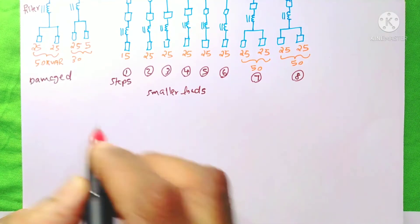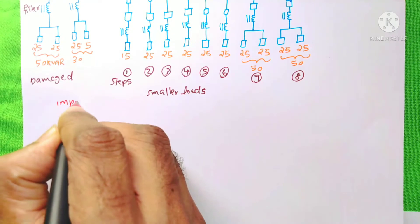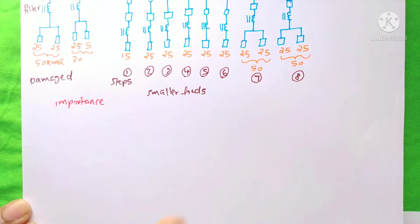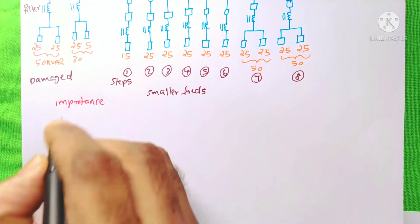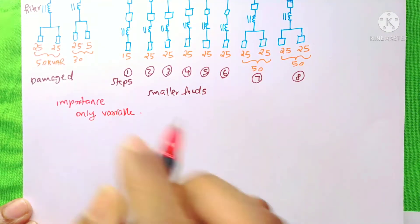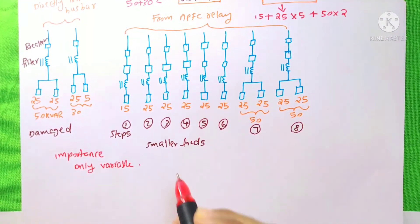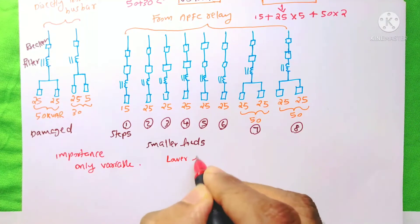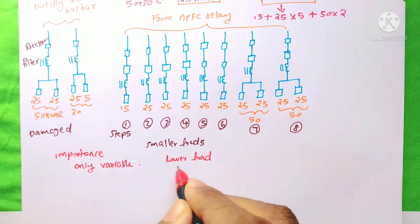Now, I will tell you what is the importance of fixed and variable capacitor bank. Suppose, your system only has variable capacitor bank. So, the main problem will happen at the time of the lower load condition. Take the case of a holiday.